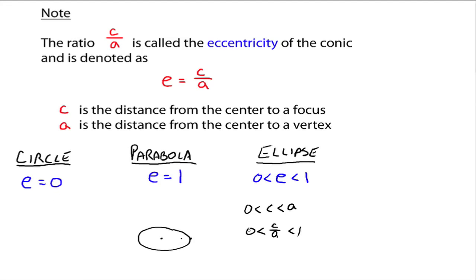When e gets closer to one — say .999 or whatever — you get a very, very flat ellipse. For example, the eccentricity for the orbit of Earth is .017, so it's very, very close to being a circle. Contrast that with the eccentricity for the orbit of Halley's Comet, which is .98 — that's a really, really flat ellipse.